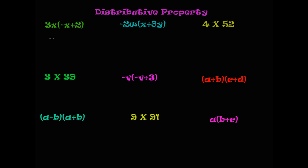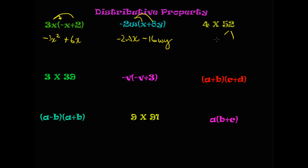There are a few minutes left — go ahead and pause the screen to try these problems, then confirm your answers. Here we go: 3x times (negative x plus 2) — distribute through: 3x times negative x is negative 3x squared, and 3x times 2 is 6x. Next: negative 2w times (x plus 8y) — negative 2w times x is negative 2wx, and negative 2w times 8y is negative 16wy. For 4 times 52: break 52 into 50 plus 2, so 4 times 50 is 200 and 4 times 2 is 8, giving 208.